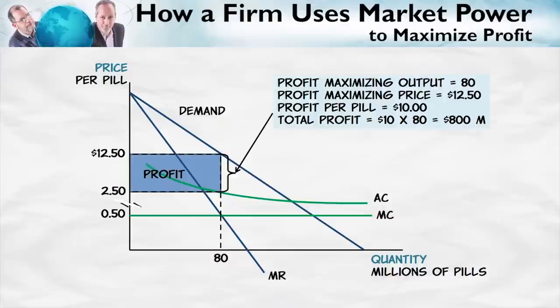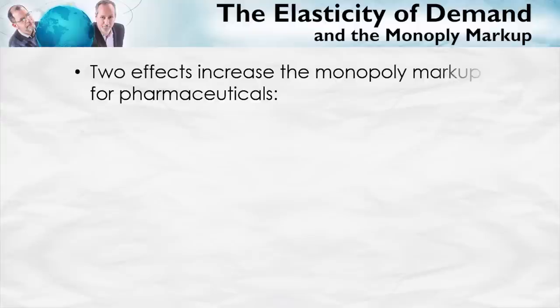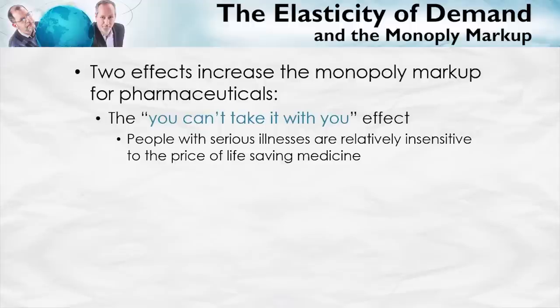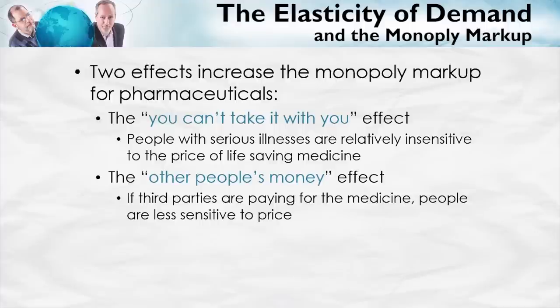Now let's give some intuition for what determines the size of the monopoly markup. For intuition, let's go to our case of a pharmaceutical. Two effects are going to increase the monopoly markup in this case. First, the you-can't-take-it-with-you effect: people with serious illnesses are going to be relatively insensitive to the price of life-saving medicine. You can't take it with you, so you may as well spend all you have trying to save your life. If the price of a life-saving medicine goes up, the quantity demanded isn't going to go down very much. Since the customers are insensitive to the price, the monopolist is going to say: I can increase the price and they're still going to buy, so I should increase the price — it would be profit-maximizing to do so.